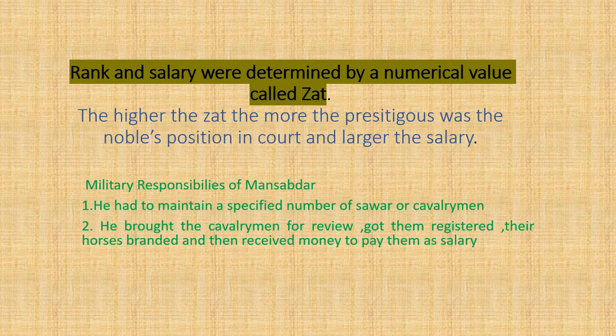The rank and salary of a Mansabdar were determined by a numerical value called ZAT. The higher the ZAT, the more prestigious was the noble's position and the higher the salary. The military responsibility of a Mansabdar was to maintain a specified number of Sawar, or cavalrymen. He would bring these cavalrymen, register them, and their horses were branded. The money they received was paid as salary.